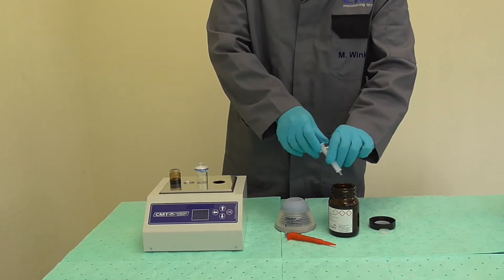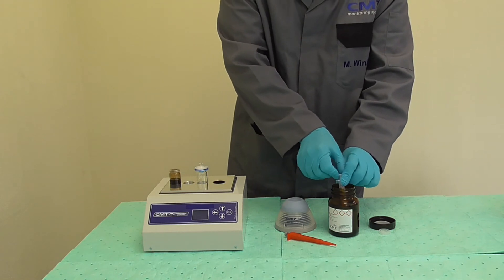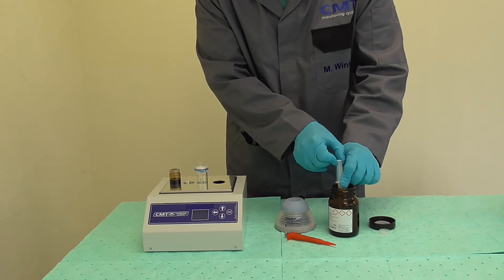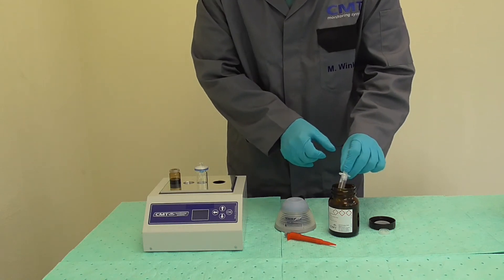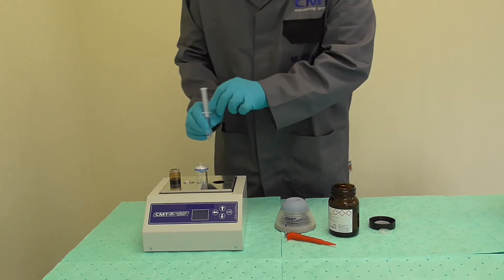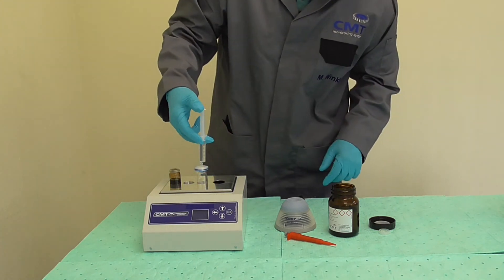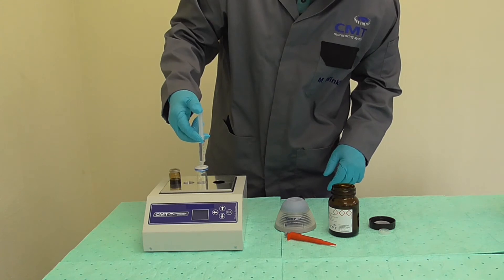Fill a six milliliter syringe to its six milliliter mark with cat fine reagent. Mount the syringe onto the filter and push one milliliter through the filter into vial number two. Leave the syringe on the filter.